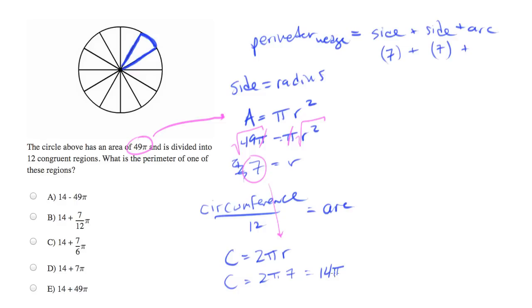And wow, this is going to get ugly because we have to now divide that by 12. But what are you going to do? So let's take our 14 pi and plug that in for the circumference.